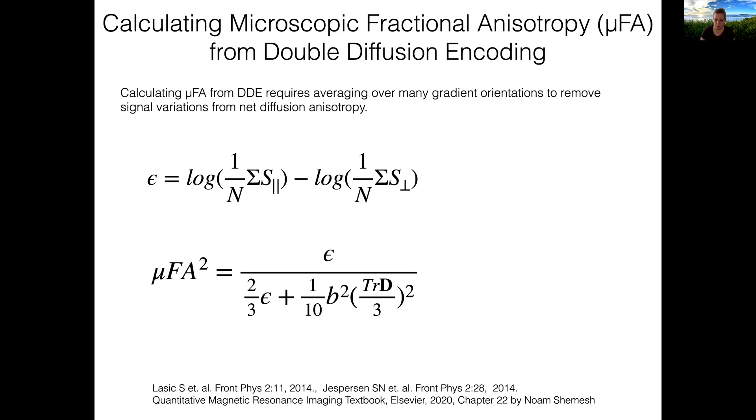Several metrics have been proposed for quantifying this property of microscopic diffusion encoding. I encourage you to look at some of the references that I've listed below, which attempt to explain how the various metrics relate to each other. For the double diffusion encoding sequence, I'll show you here one way to quantify a measure of microscopic fractional anisotropy. This formula relies on averaging signals over many gradient orientations to remove signal variations from net diffusion anisotropy. The average signals acquired with perpendicular diffusion gradients are subtracted from the average signals acquired with parallel diffusion gradients, and we then relate to the b-value and diffusion tensor as follows.